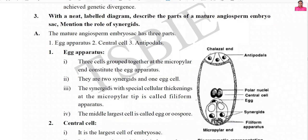Now let us look at which question we are going to discuss. The question is the third question in the third unit: 'With a neat labelled diagram, describe the parts of the mature angiospermic embryo sac.' The question also mentions the role of synergids. Whenever we say mature angiospermic embryo sac, you should keep this diagram in mind — this is the mature angiospermic embryo sac.